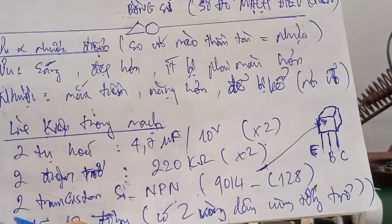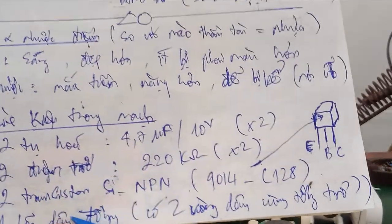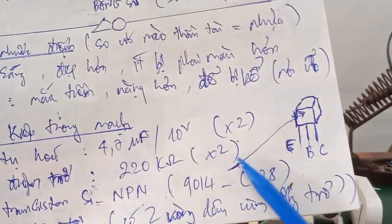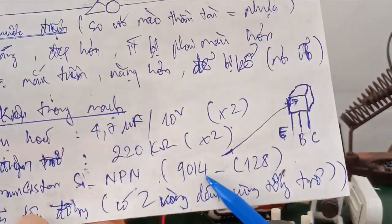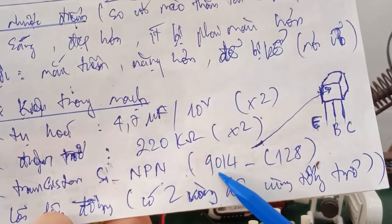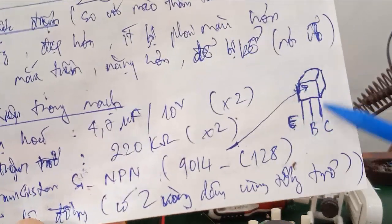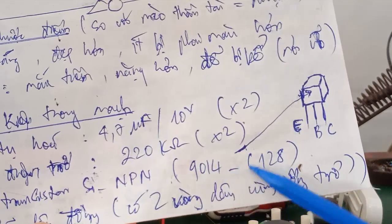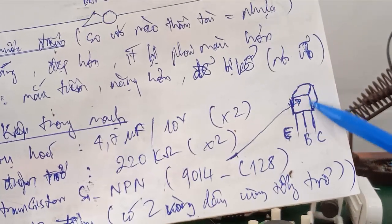Tiếp theo là có hai con điện trở 220 kilo Ohm. Đây là điện trở vòng màu. Tiếp theo, nó sẽ có hai con transistor NPN C128. Mã số trên là 9014. Từ đây mình có vẽ ra cái sơ đồ chân của nó. Là chân E, chân B, chân C. Phía trước. Cái mã số này nó nằm phía trên luôn. Phương hình chữ nhật.